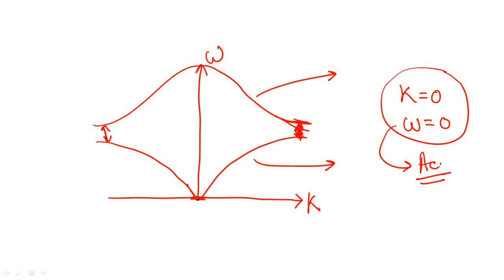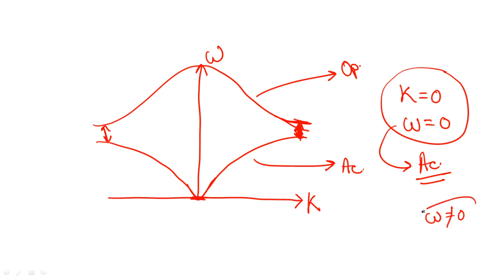The acoustical branch gives a kind of V-shape. The upper branch is the optical branch, because in the optical case, omega will not be equal to 0 even when you take k equal to 0.